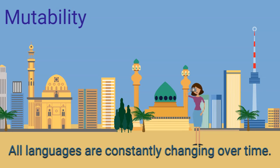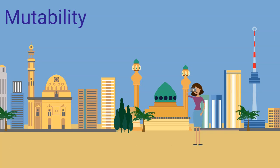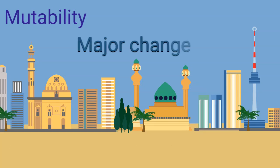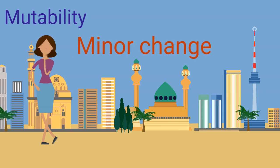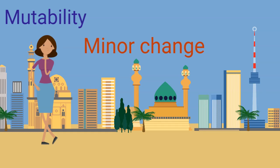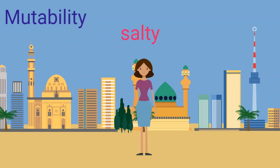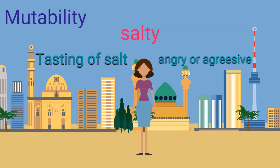The fourth property is mutability. All languages are constantly changing over time. The first type is major change, which takes a very long time and happens at the structure level, word level, and all levels of language. For example, older forms of words like 'say' and 'word' are different from what we use today. The second type is minor change, which happens quickly — perhaps in two or three years — and occurs mostly at the word level, particularly slang. For example, 'salty' ordinarily means tasting of salt, but as slang it means angry or aggressive. This happens in all languages because languages are subject to change.